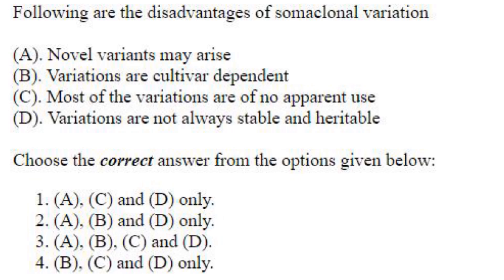Regarding disadvantages of somaclonal variation: 'novel variants may arise' is not a disadvantage. 'Variations are cultivar dependent' — correct. 'Most of the variations are of no apparent use' — also correct. 'Variations are not always stable and heritable' — also correct. So B, C, D are the disadvantages. The answer is option 4.